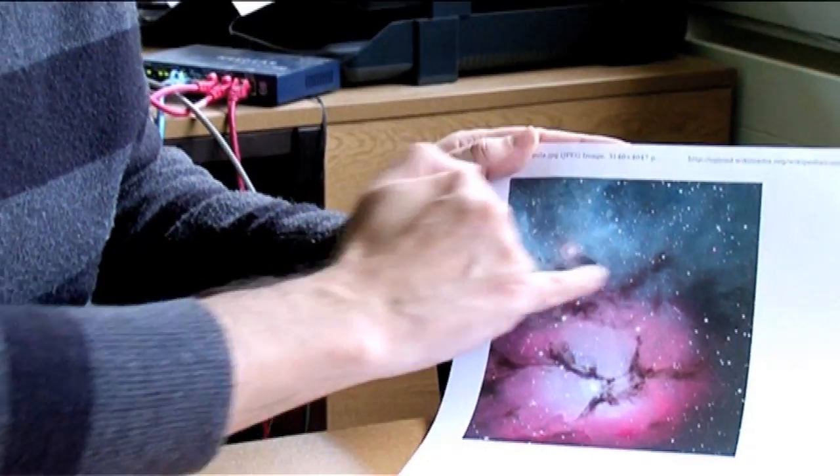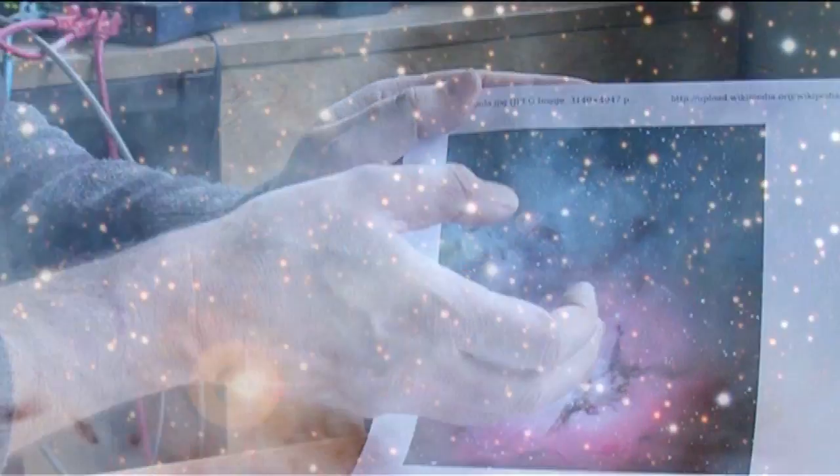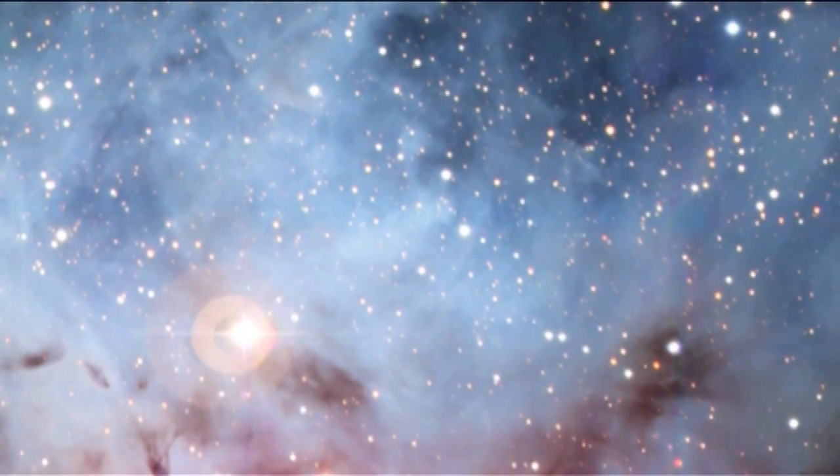Then up here, this blue stuff at the top, is a reflection nebula, and that's where the light from the stars is coming out, hitting that gas and dust, and being scattered off towards us, so we see this scattered light coming our way.